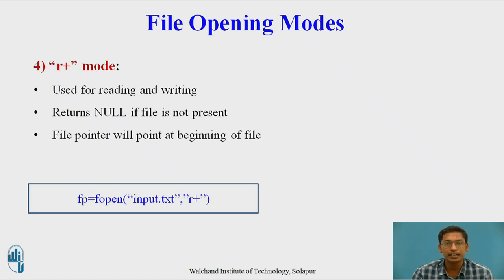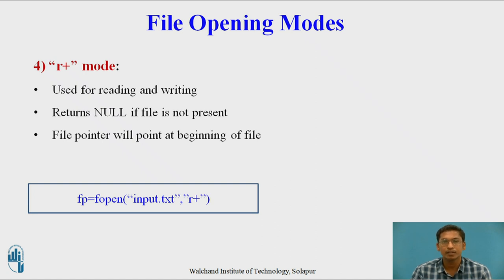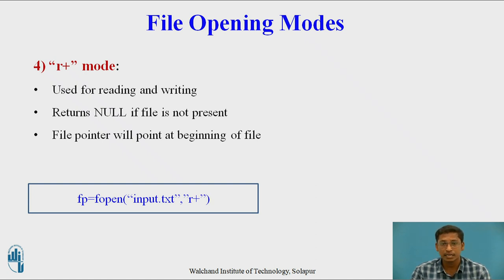Now we look at the advanced file opening modes: r+, w+, and a+, which are more advanced than the basic r, w, and append modes. r+ is used for both reading and writing purpose. It returns null if the file is not present, and the file pointer will point at the beginning of the file. Both reading and writing are possible with r+ mode. Example: fp = fopen("input.txt", "r+").